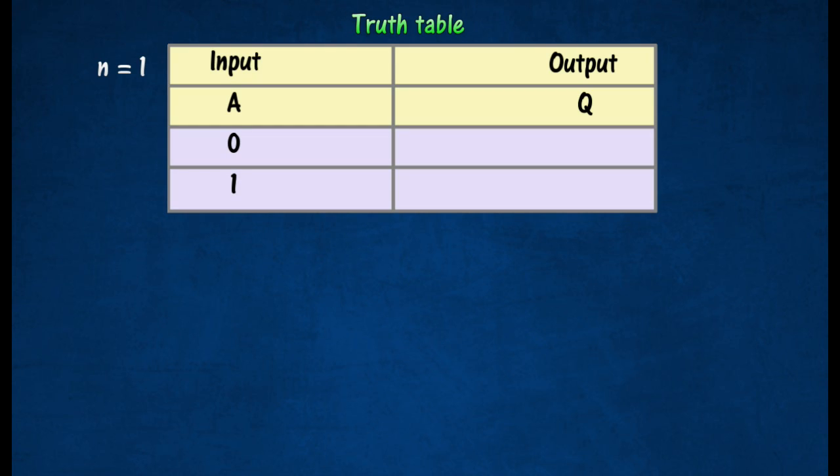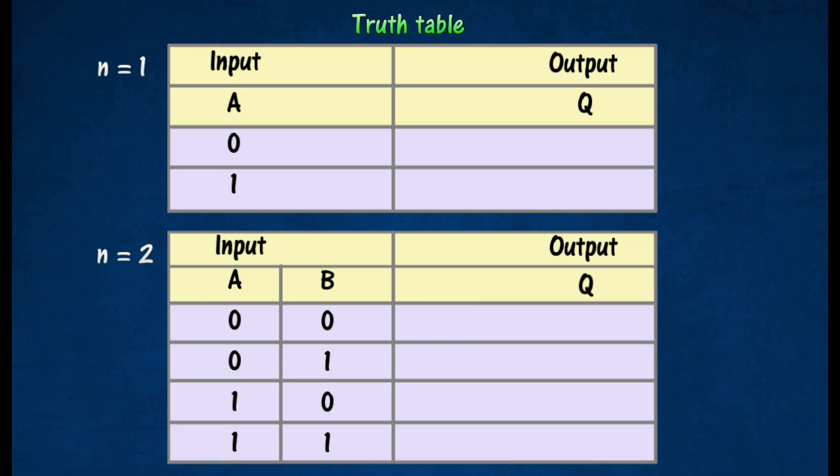For a combination of Logic Gates, the state of an output is dependent on the states of the inputs and the types of Logic Gates used. All possible situations of the inputs and outputs of the Logic Gates can be listed in a table called the truth table.